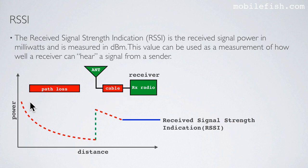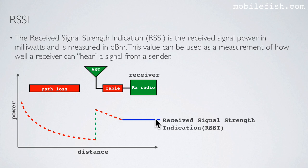In this picture I have not drawn the sender side — I am only interested in the receiver side. This is the path loss, the antenna gain, the cable and connector loss, and this is the receive signal strength indication, or RSSI.